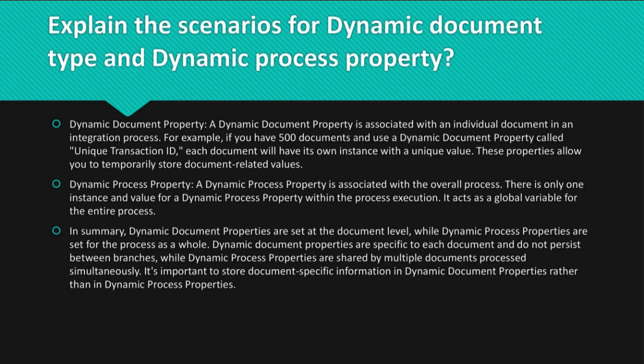Dynamic process property: A dynamic process property is associated with the overall process. There is only one instance and value for a dynamic process property within the process execution. It acts as a global variable for the entire process. In summary, dynamic document properties are set at the document level, while dynamic process properties are set for the process as a whole.